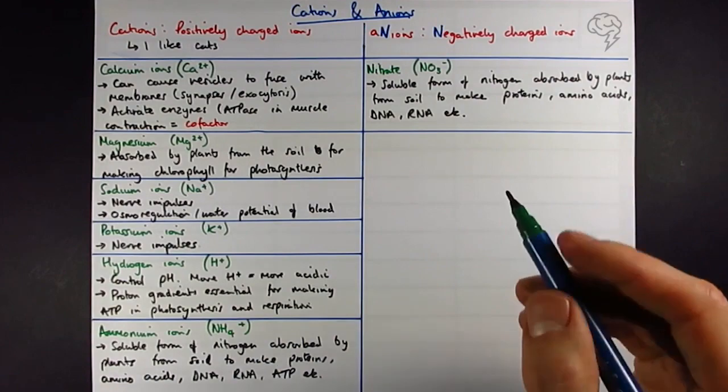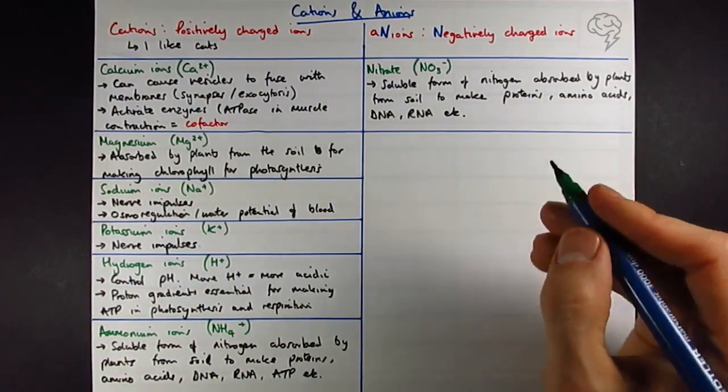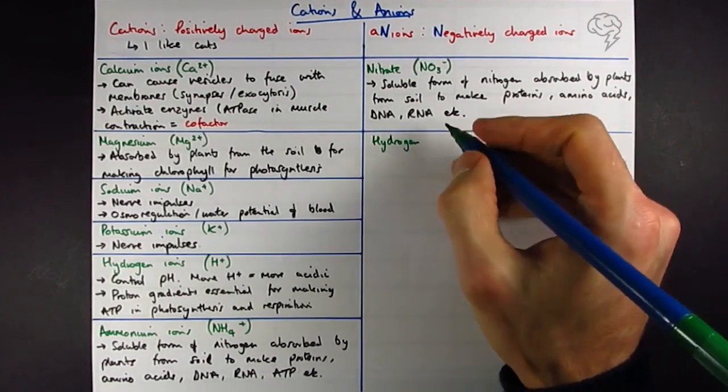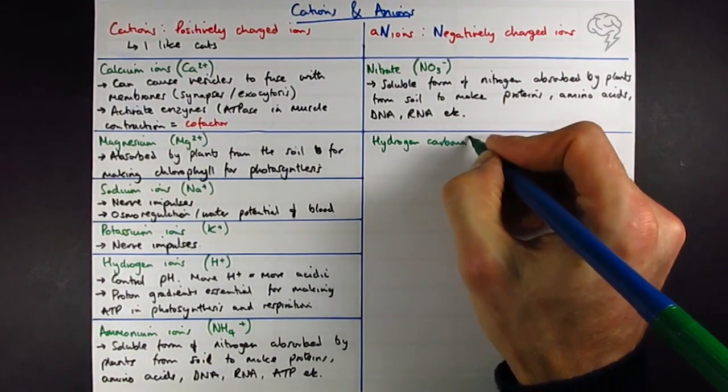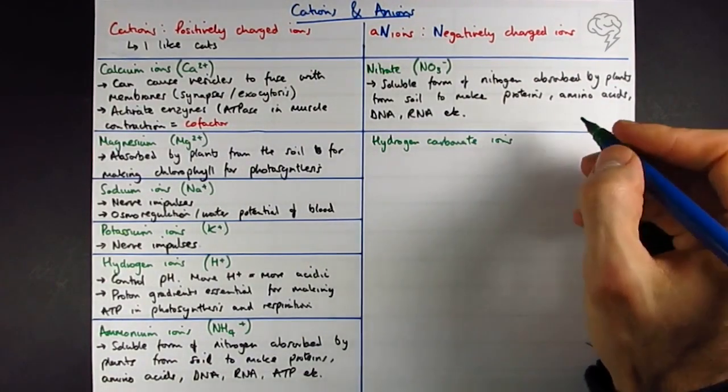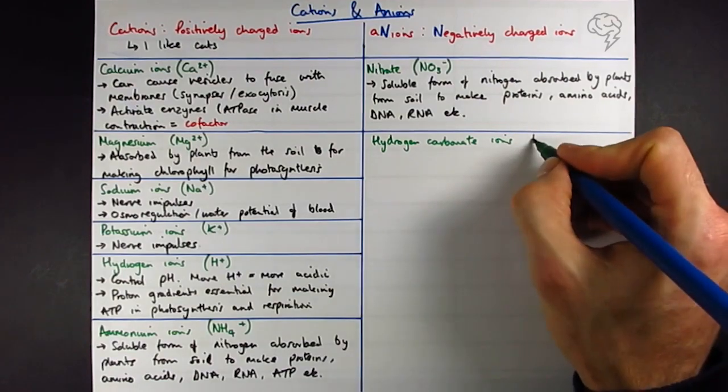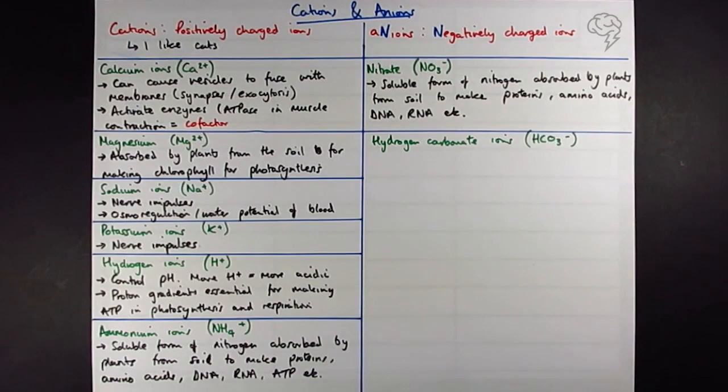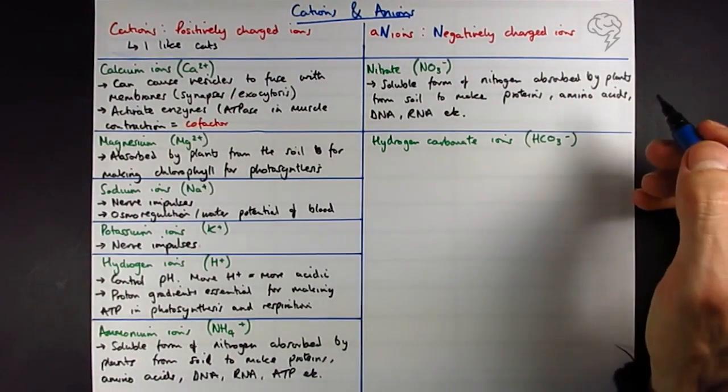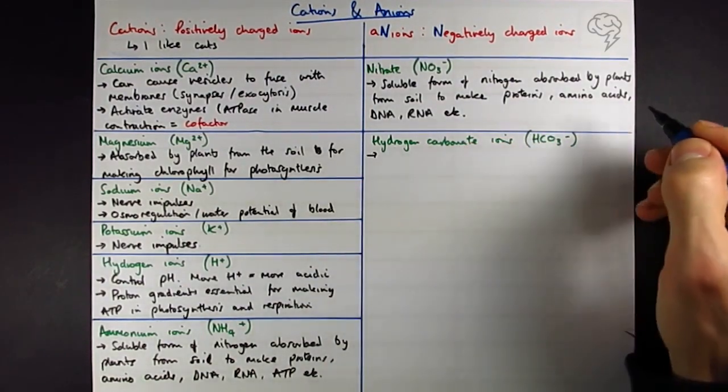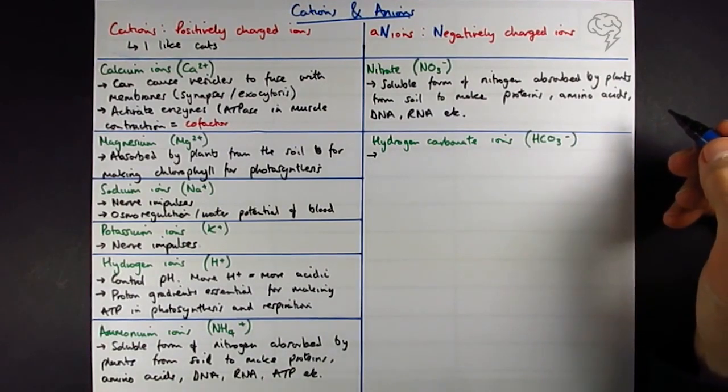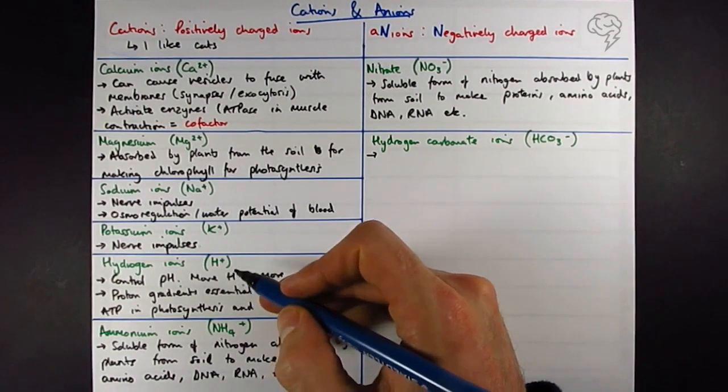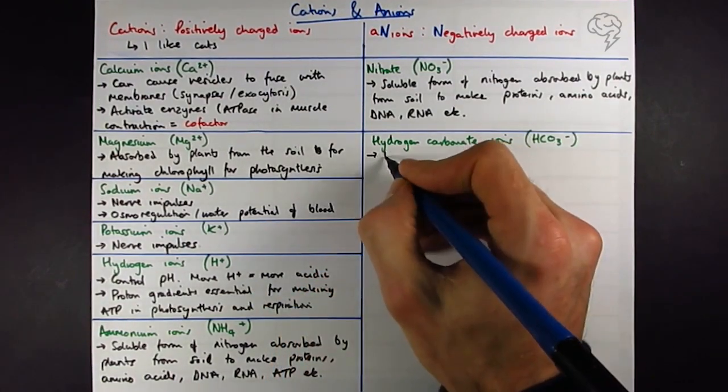Let's move over to some of the anions. So we've got hydrogen carbonate ions. These guys are HCO3-. So this is going to be used to balance or buffer the pH of the blood because it can absorb some of protons, and it can then reduce the acidity of the blood.